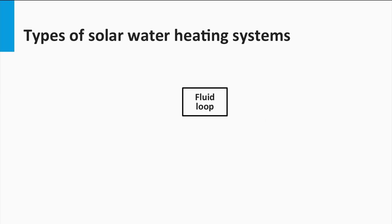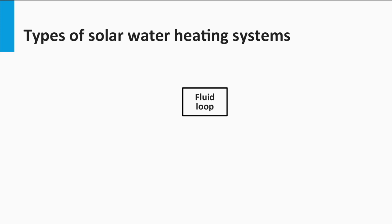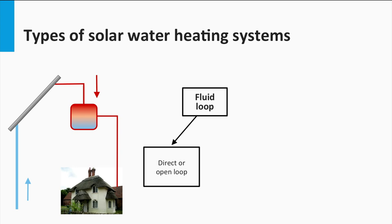There are several ways to classify solar water heating systems. The first way is by the fluid heated in the collector. When the fluid used in the application is the same that is heated in the collector, it is called a direct or open loop. When the fluid heated in the collector goes to a heat exchanger to heat up the utility fluid, it is called an indirect or closed loop.